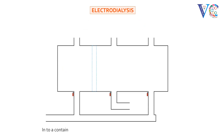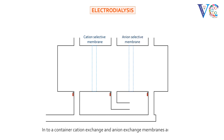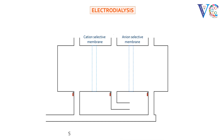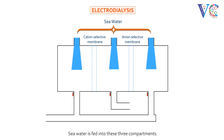Into a container, cation exchange and anion exchange membranes are fitted. Thus, the container is divided into three compartments. Sea water is fed into these three compartments.